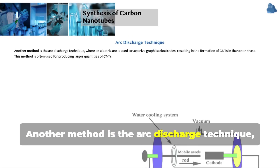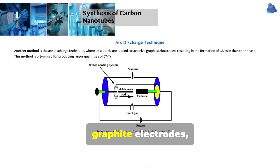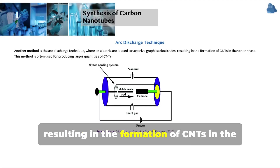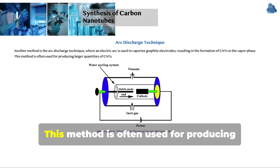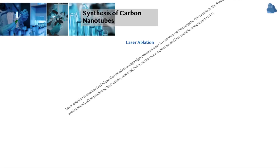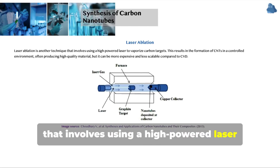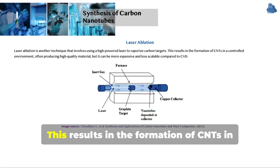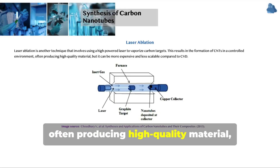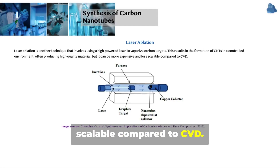Another method is the arc discharge technique, where an electric arc is used to vaporise graphite electrodes, resulting in the formation of CNTs in the vapour phase. This method is often used for producing larger quantities of CNTs. Laser ablation is another technique that involves using a high-powered laser to vaporise carbon targets, resulting in the formation of CNTs in a controlled environment, often producing high-quality material, but it can be more expensive and less scalable compared to CVD.